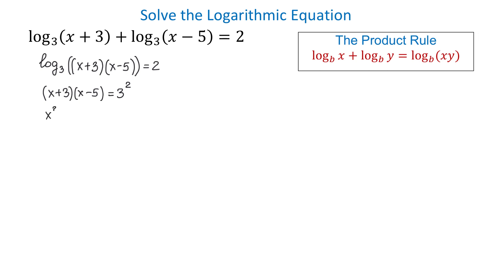On the left side, x times x is x squared, x times negative 5 is negative 5x, 3 times x is 3x, and 3 times negative 5 is negative 15. On the right side, 3 squared is 9.